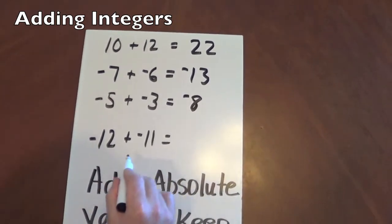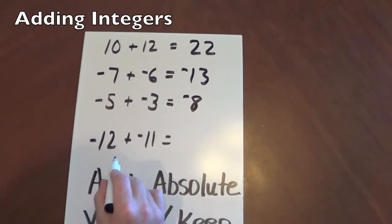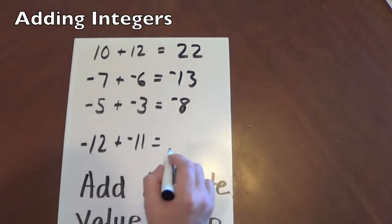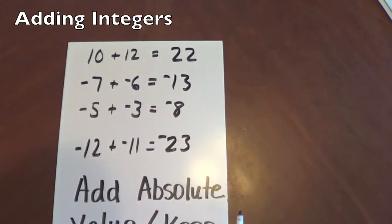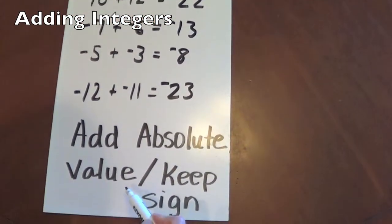12 plus 11. Absolute value of negative 12 is 12. The absolute value of negative 11 is 11. You add them together, you get 23. And we keep the sign. So we add the absolute value and we keep the sign.